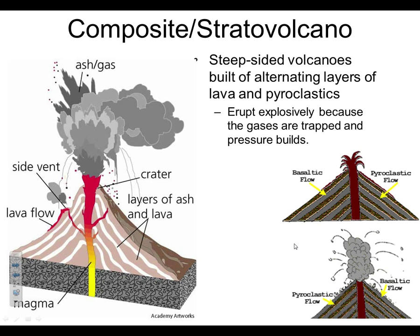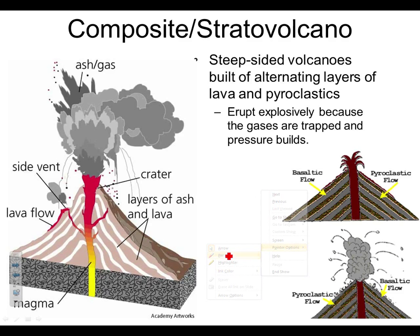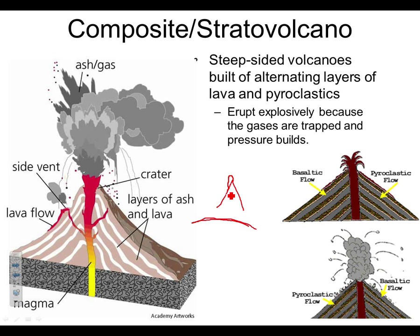Why are they steep-sided? They're steep-sided because the lava is high viscosity. Remember when we talked about shield volcanoes — shield volcanoes were very gently sloping because when the lava erupted it ran down the sides all the way to the ocean. Stratovolcanoes are very steep because when the lava erupts it can't run all the way down the side before it dries. Also, it's not always lava — lots of times there are pyroclastics too.